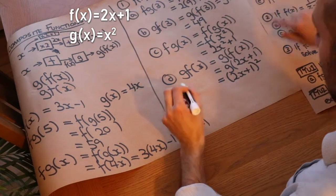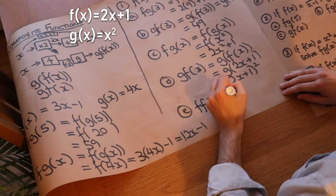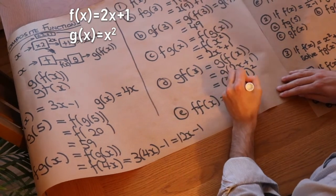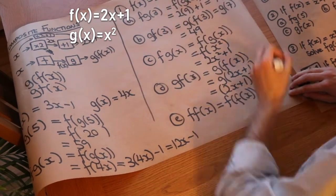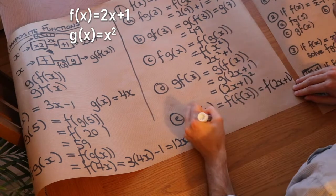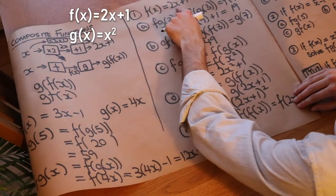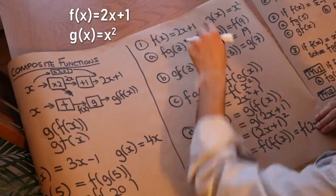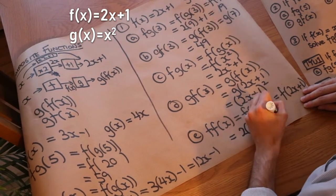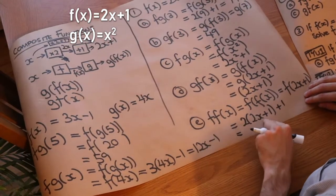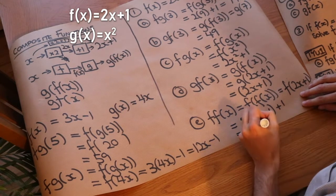Finally, let's find f(f(x)) — applying f twice. We write f(f(x)) and replace the inner f(x) with 2x + 1, giving f(2x + 1) = 2 times (2x + 1) plus 1. Expanding and simplifying: 2 times 1 is 2, plus 1 is 3, so we get 4x + 3.